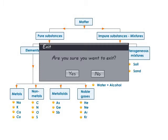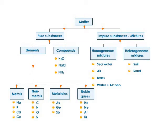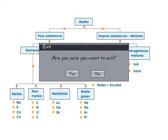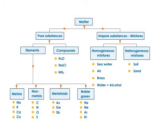When the mixture is uniform, like when you dissolve salt in water, you call it a homogeneous mixture. But when it is not uniform, you can easily separate the components. For example, in a mixture of sand and stones, you can pick out the stones easily. Such mixtures are called heterogeneous mixtures.